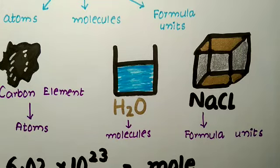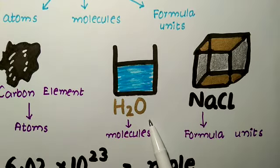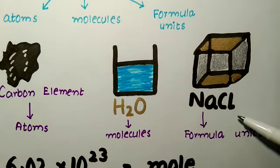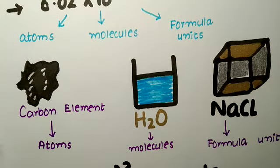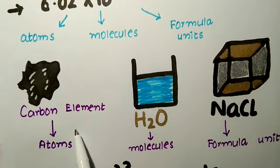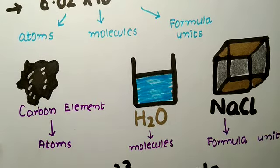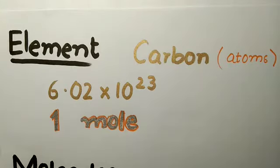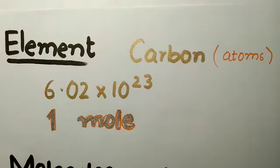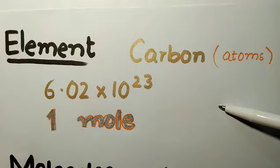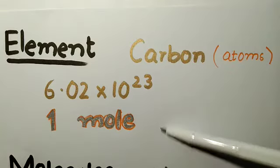Now let's find how many elements are in carbon, in water molecules, and in NaCl formula units. For example, one mole of carbon atoms is equal to 6.02 × 10²³, which equals one mole.